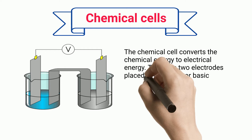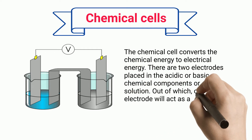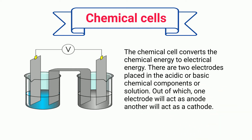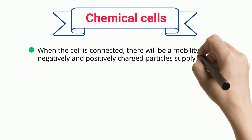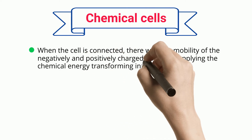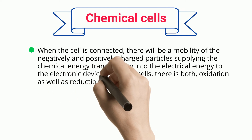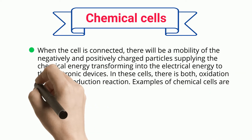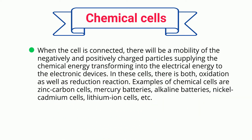There are two electrodes placed in the acidic or basic chemical components or solution. One electrode will act as anode and another will act as cathode. When the cell is connected, there will be a mobility of the negatively and positively charged particles supplying the chemical energy transforming into electrical energy to the electronic devices. In these cells, there is both oxidation as well as reduction reaction. Examples of chemical cells are zinc carbon cells, mercury batteries, alkaline batteries, nickel cadmium cells, lithium ion cells, etc.